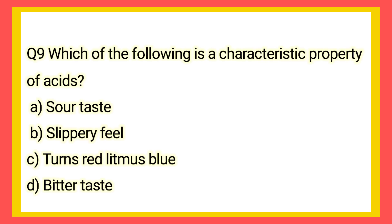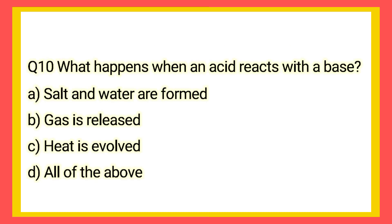Question 9: Which of the following is a characteristic property of an acid? The aqueous part of an acid — Option A — and water is the correct answer.